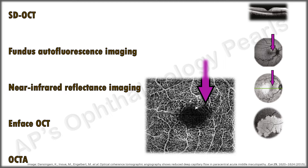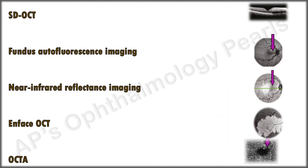Subsequent reperfusion injury produces a picture of attenuation and pruning of the deep capillary plexus, which correlates with inner nuclear layer atrophy. Central retinal artery occlusion should be considered in patients with diffuse PAM, even with normal clinical and OCT angiographic findings. The use of OCTA in conjunction with en-face OCT has proved superior to other imaging modalities in identifying PAM.